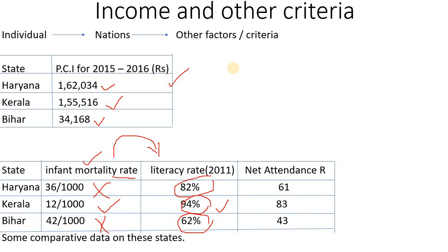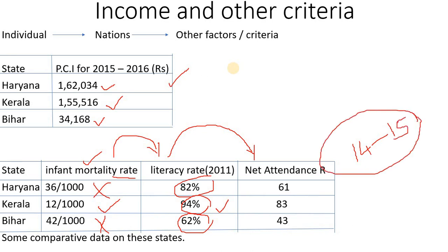Kerala is a developed state. The third criterion is the Net Attendance Ratio — at the age of 15, how many students are in school? Kerala leads with the highest ratio. If you ask who is a developed state, Kerala is the developed state.